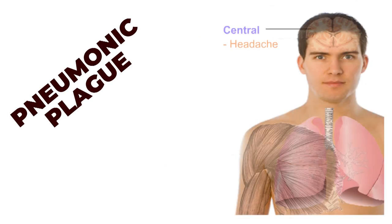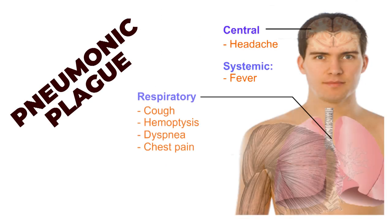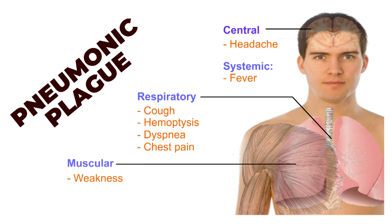Pneumonic plague is a pneumonia characterized by a thin watery sputum with bright red streaks of blood. The mortality is 100% in untreated cases.